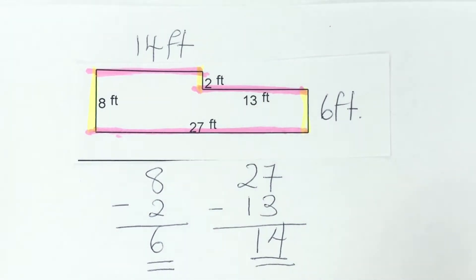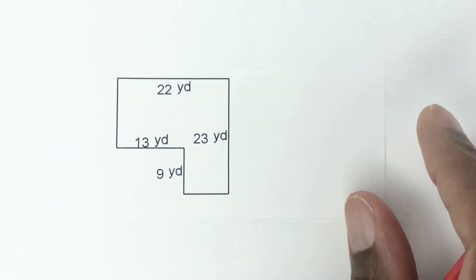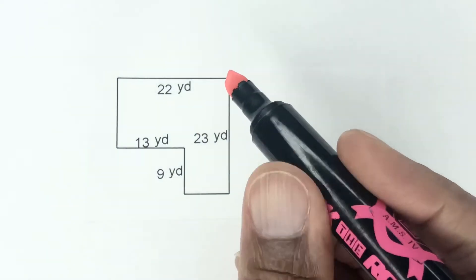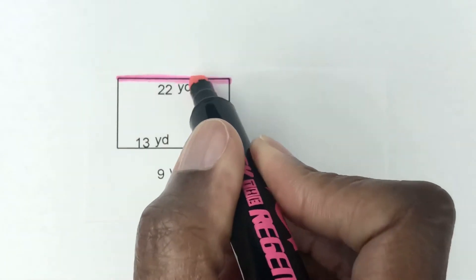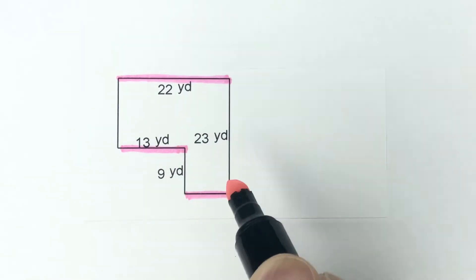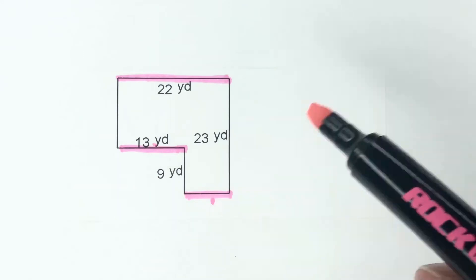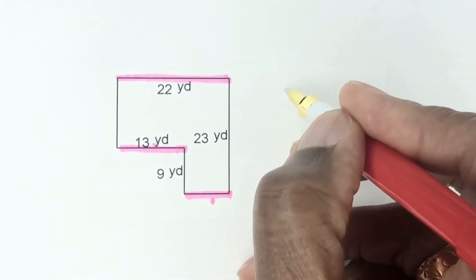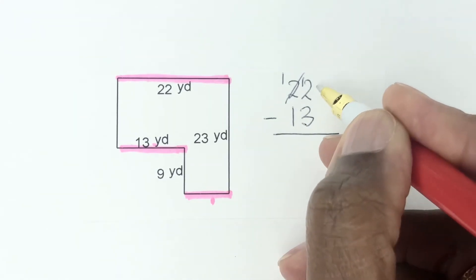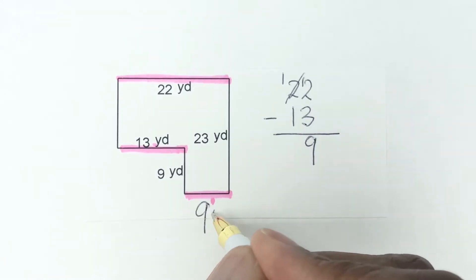Let's go on to the next shape. Here we have a missing side as well. Let's do the horizontal side first. The whole side here is 22 yards, and then we have a horizontal here as 13 — and this one here is missing. So 22 minus 13 is going to give us this side. We do some regrouping: 12 take away 3 gives us 9. So this side here is 9 yards.